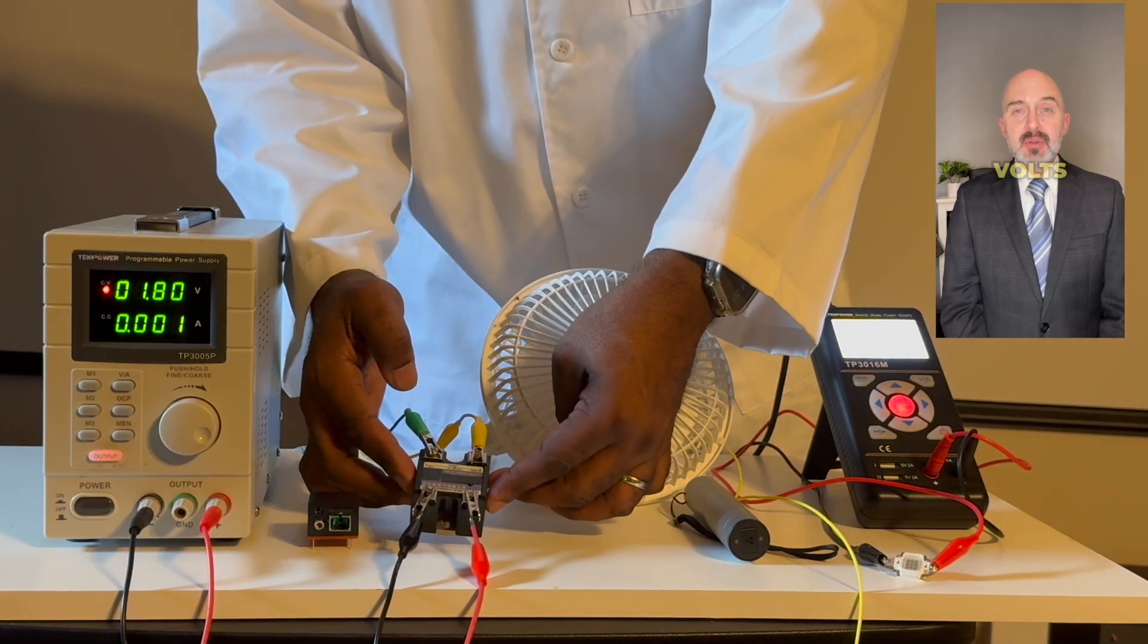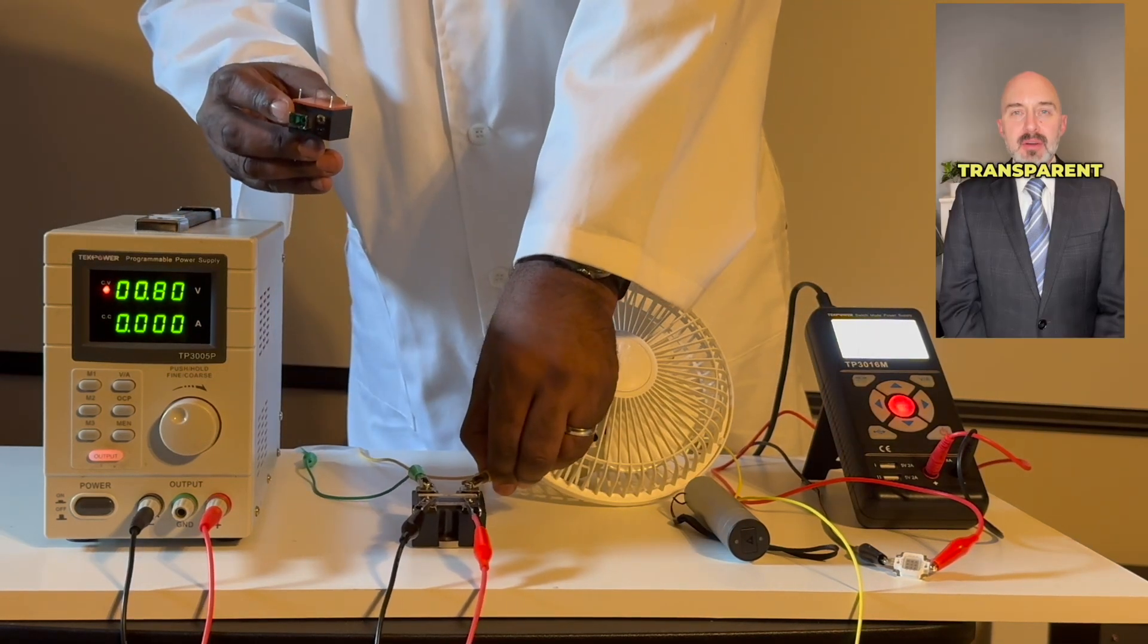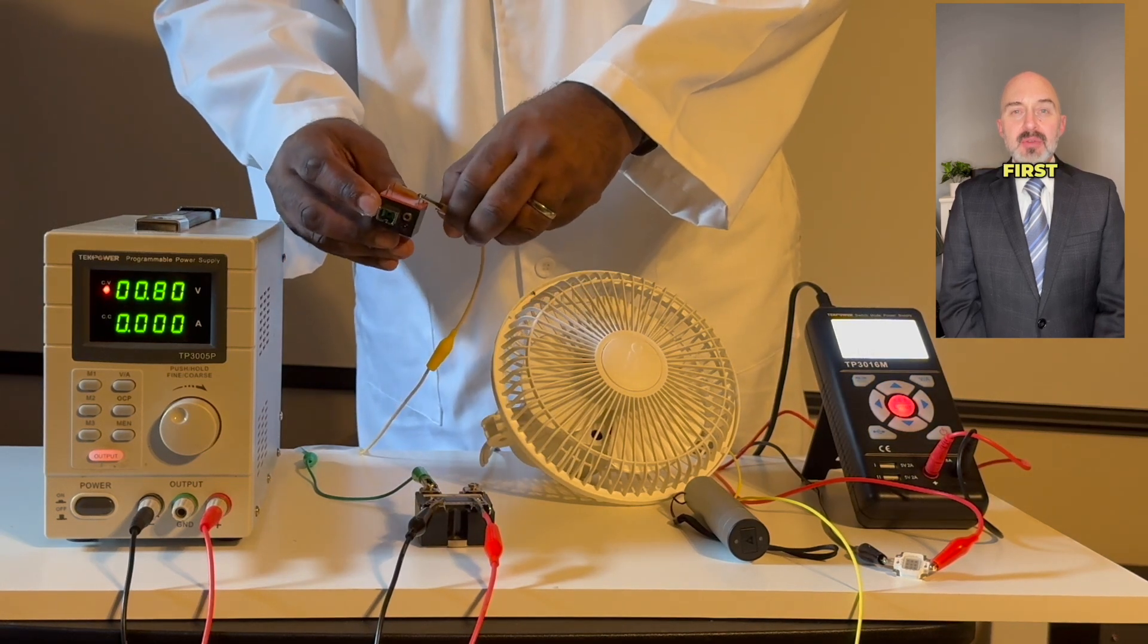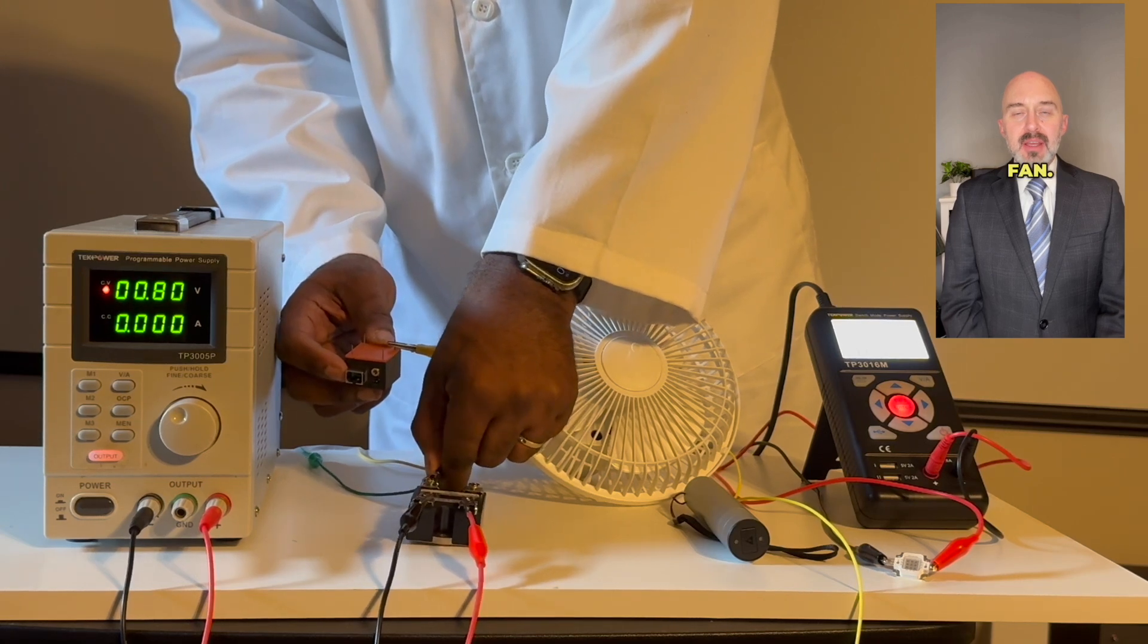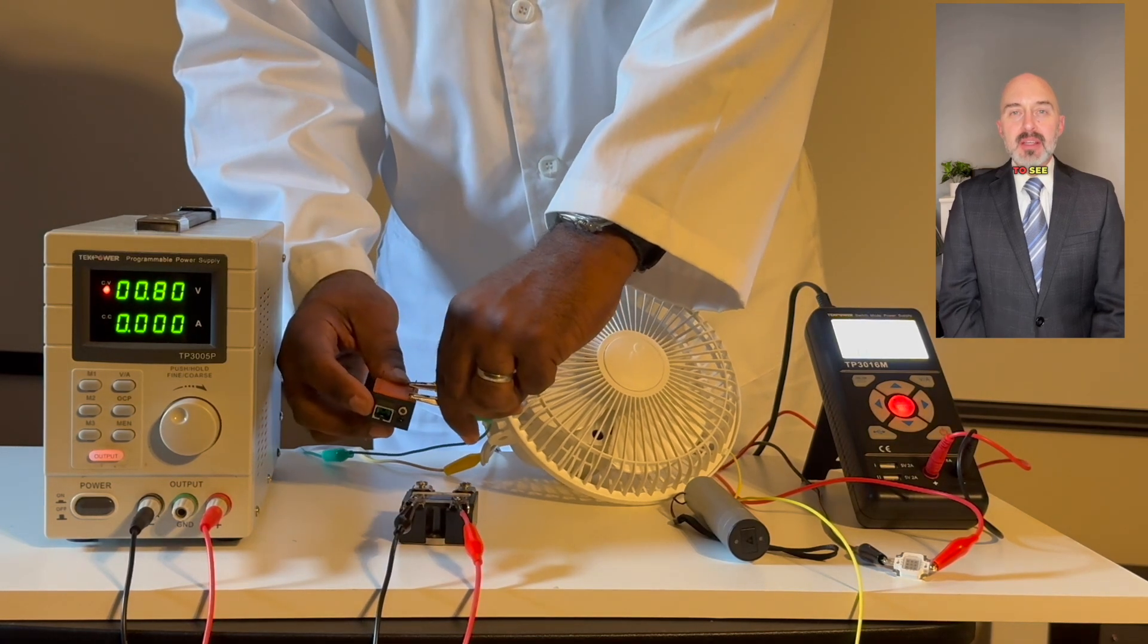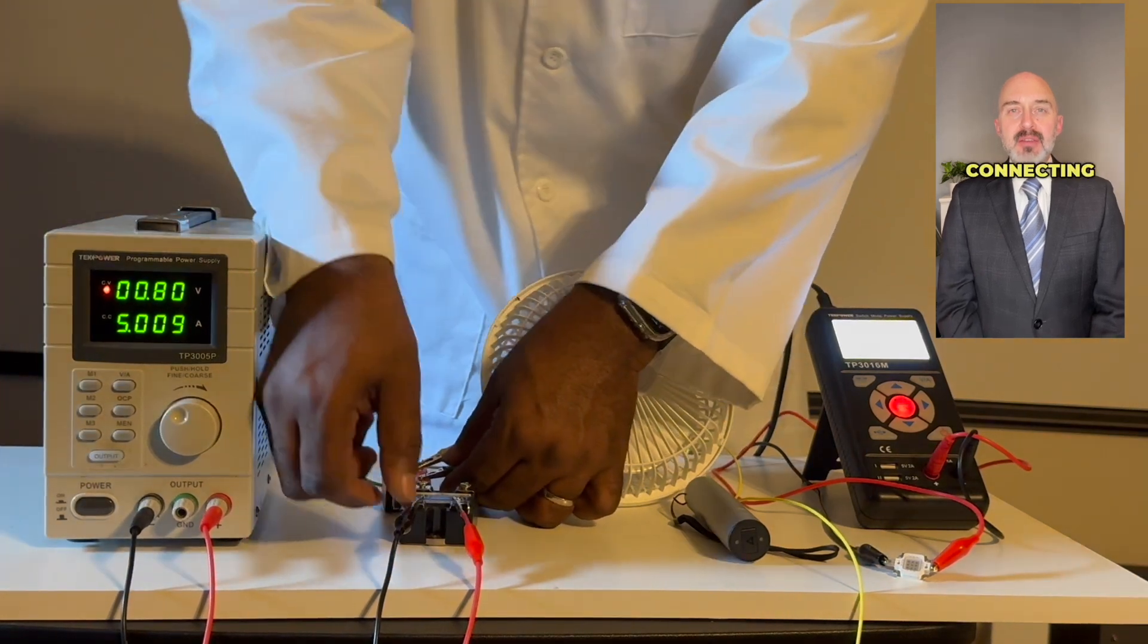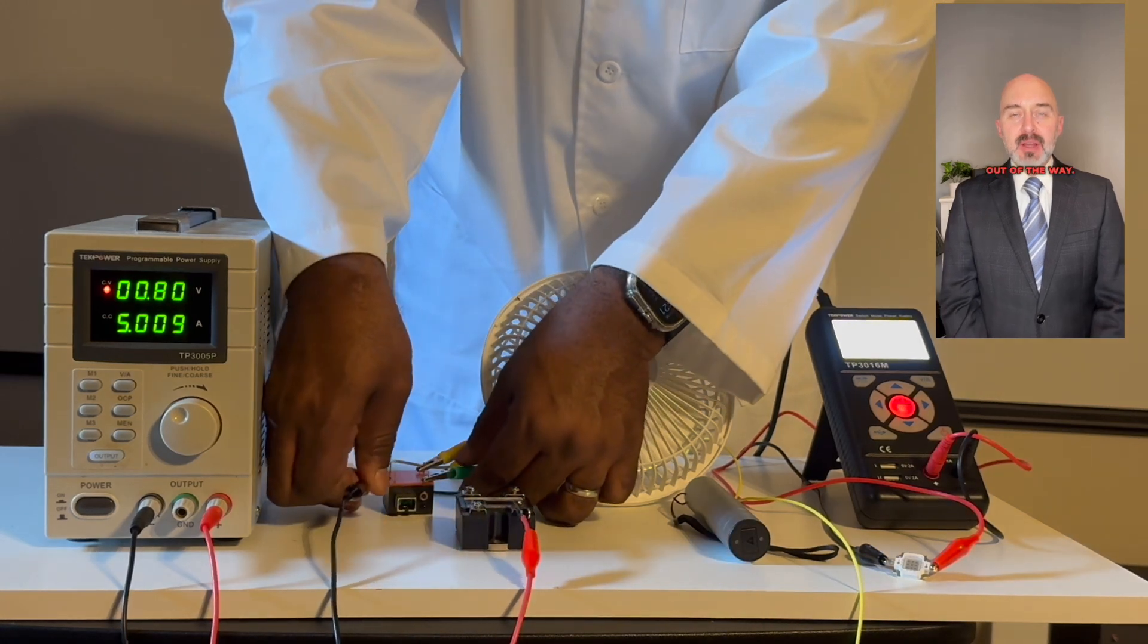We are going to next reduce the power down to 0.8 volts and connect our ultra-low-powered relay. In order to be completely transparent, we decided not to edit out the removing of the wires from the first relay and connecting of the ultra-low-powered relay to the power supply and fan. We thought it was important to see real-time the contrast between the two relays. After connecting the fan to the relay, we are now connecting the power supply to the relay.